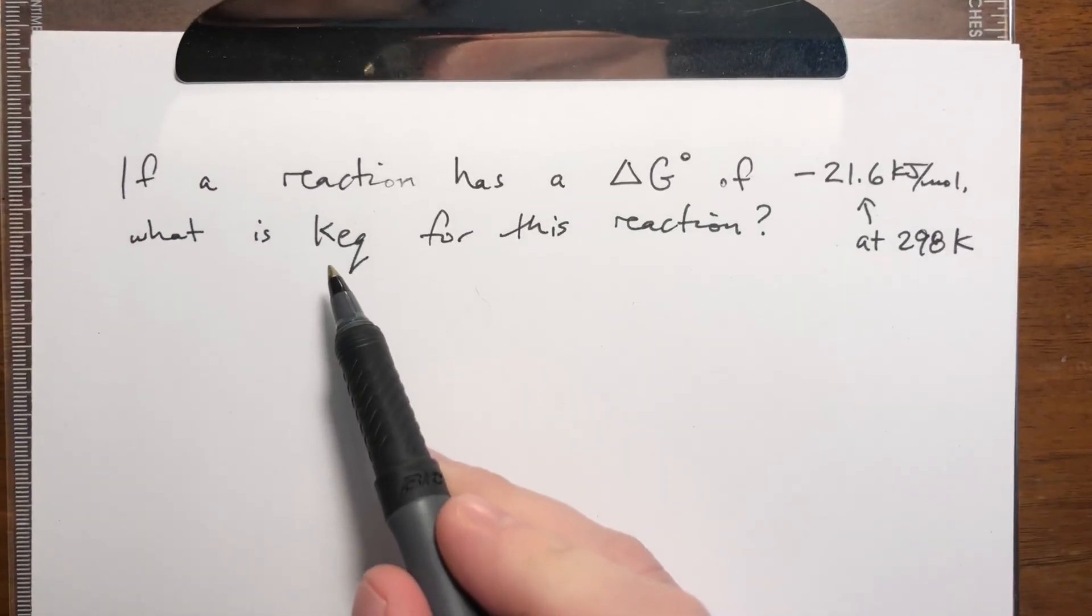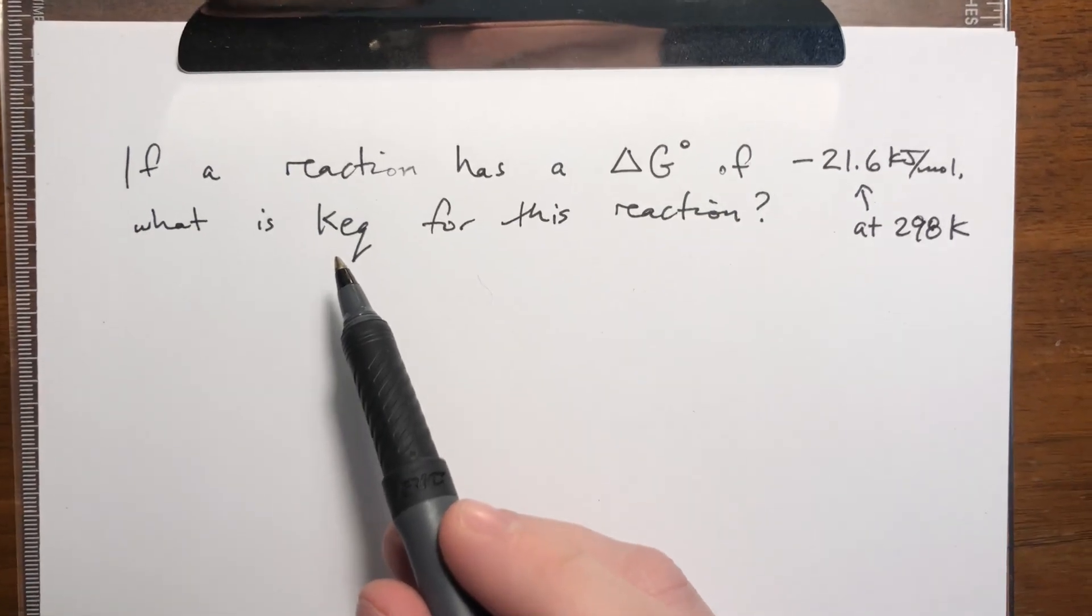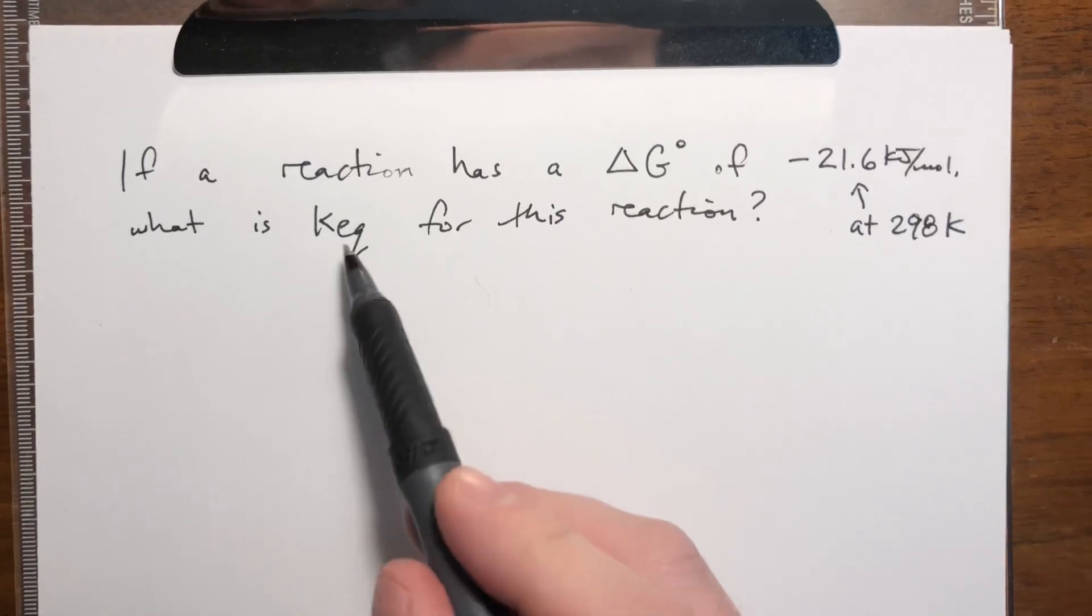And what we want to know is what is the equilibrium constant for this reaction. Keq, which we sort of offhandedly mentioned in the equilibrium chapter, is kind of a combination between Kc and Kp. Anything that is aqueous we treat as molarity, just like Kc would be.